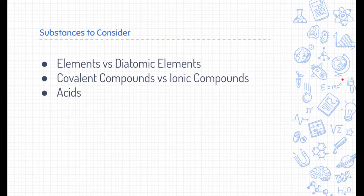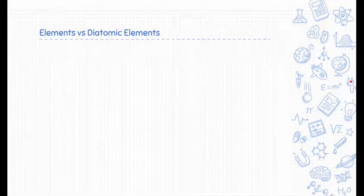There are three substances we're going to need to consider. The first type are elements — which can be regular elements or diatomic elements. The other type are compounds, and there are covalent and ionic compounds to consider in this course. The last type of substance are acids, and we'll go through each of these and give some examples.